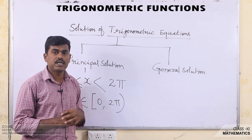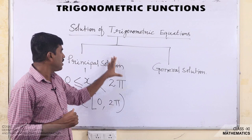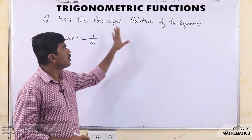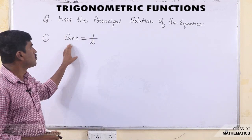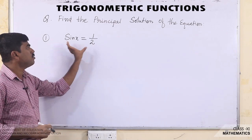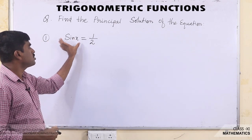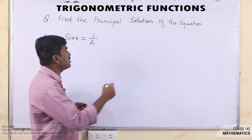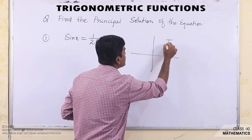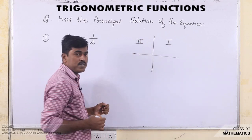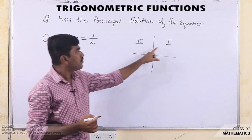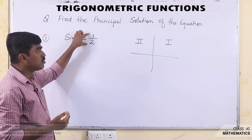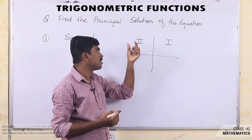Let us take some questions related to solutions of Trigonometric equations. The first question is: find the principal solution of the equation sin x = 1/2. Here the value of sin x is 1/2 and it is positive. We know that sin x is positive in the first quadrant and also in the second quadrant.